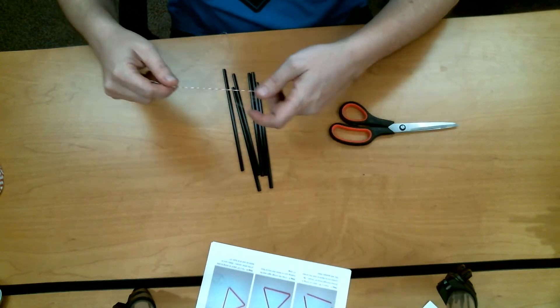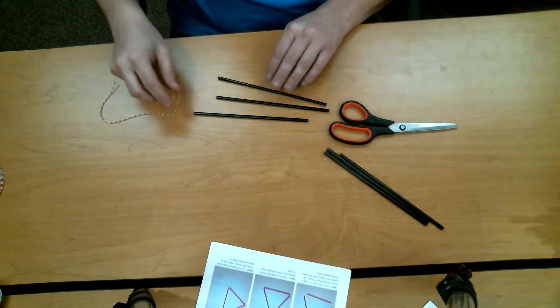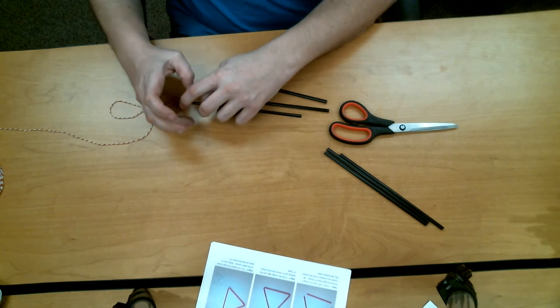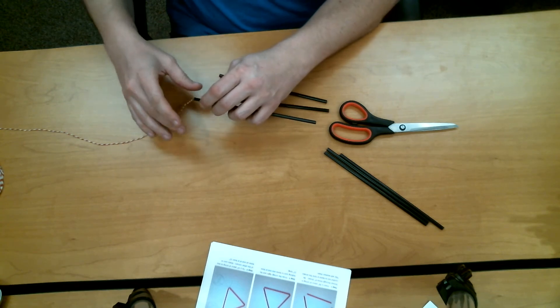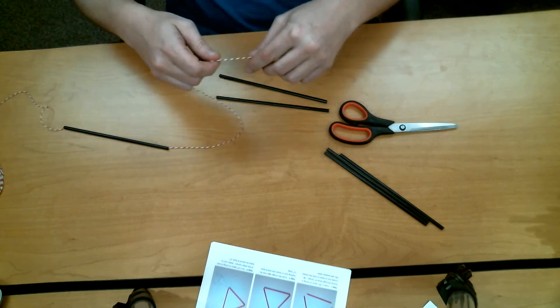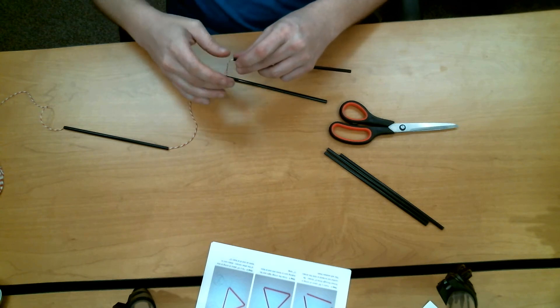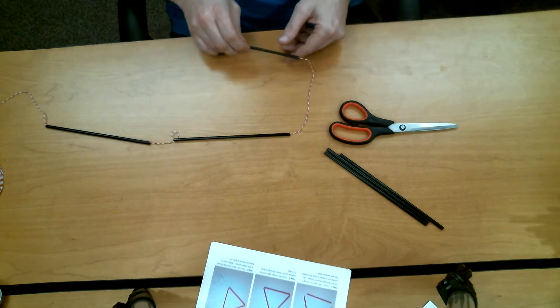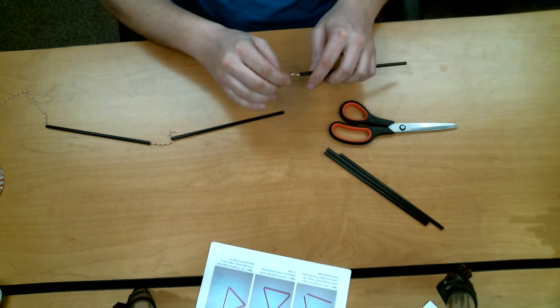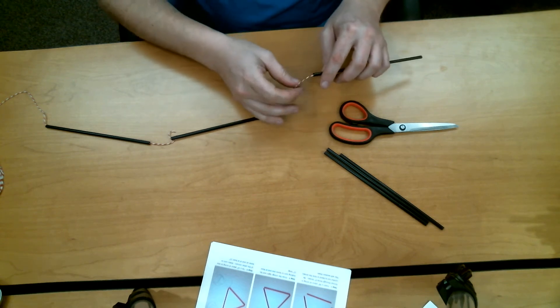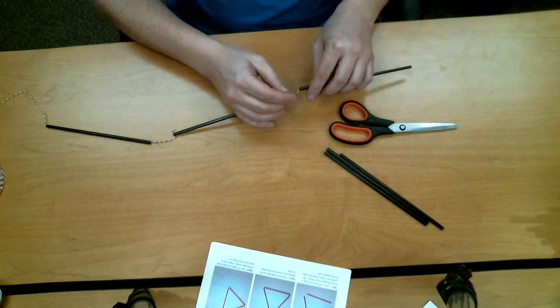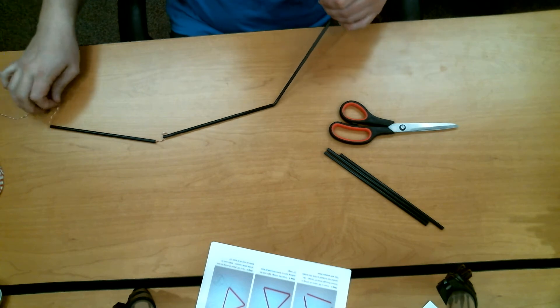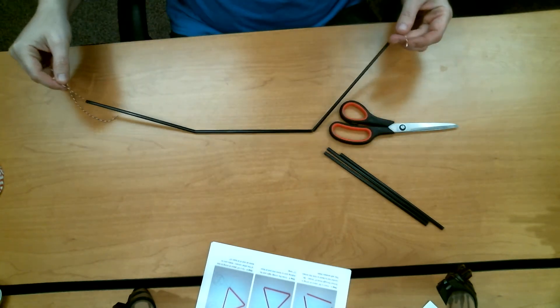Once we've got our first piece of string, we're going to take three of our six drinking straws. We're going to thread this piece of string through those three straws. There's one. There's two. And there's three. Alright. We've got three straws along our string.